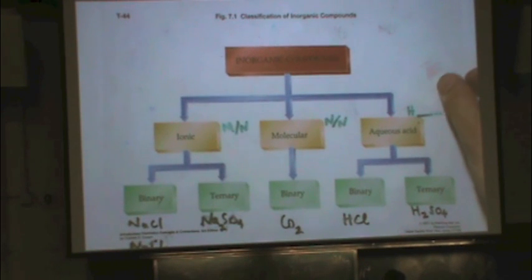This is also in the reader, not in the textbook, unfortunately. There are four types of things we're going to name. This has the first three. The types are ionic, molecular, and aqueous acid. Those are the three types.